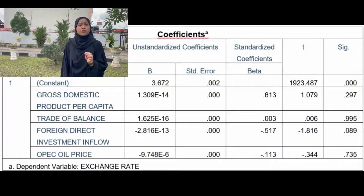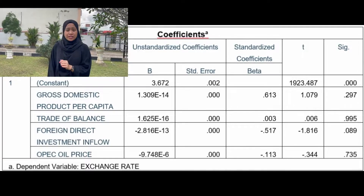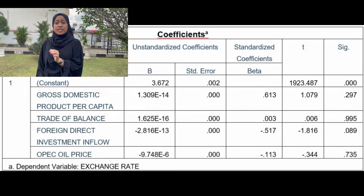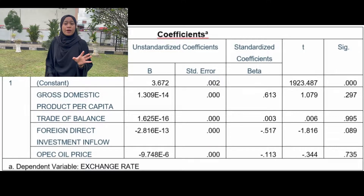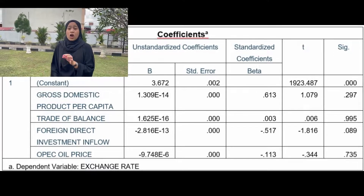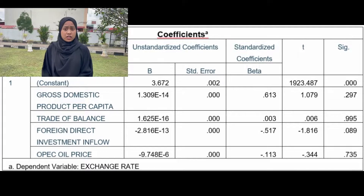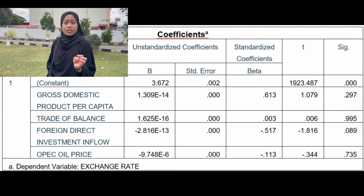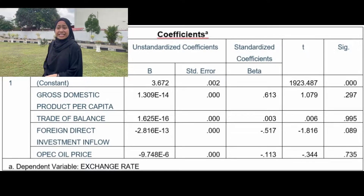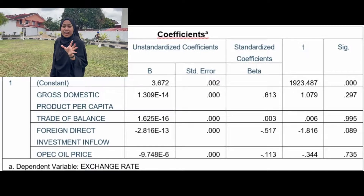For the coefficients, the statistics suggest that GDP per capita has a positive significant impact on exchange rate variability, thus rejecting the null hypothesis and accepting the alternative hypothesis. Trade balance also has a positive significant impact on exchange rate variability, again rejecting the null hypothesis. Foreign direct investment inflow and OPEC oil price have an insignificant effect on exchange rate variability, so the null hypothesis is accepted. Therefore, there is no significant relationship between FDI inflow and OPEC oil price with the UAE exchange rate.